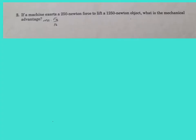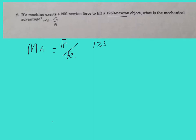Here we have a problem where a machine exerts a 250-newton force to lift a 1,250-newton object, and we're asked to calculate the mechanical advantage. Mechanical advantage equals the resistant force divided by the effort force. The object's weight of 1,250 newtons is our resistance, and 250 newtons is our effort force, giving us a mechanical advantage of 5.